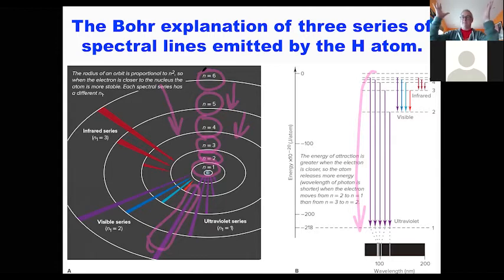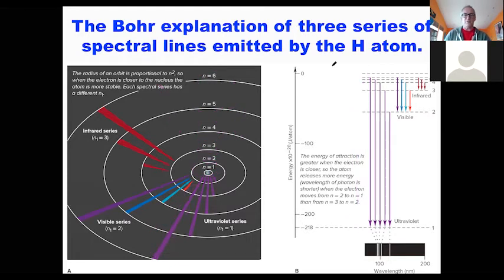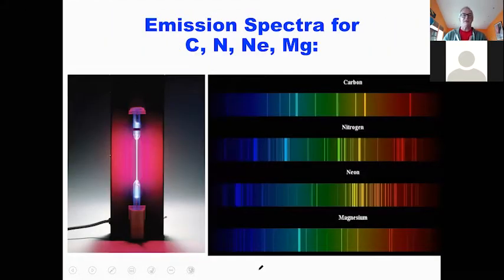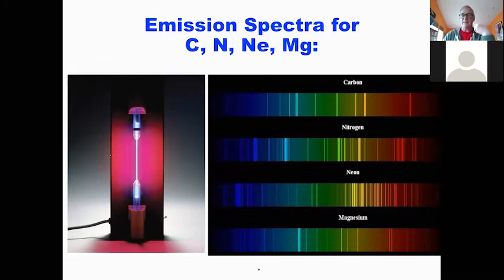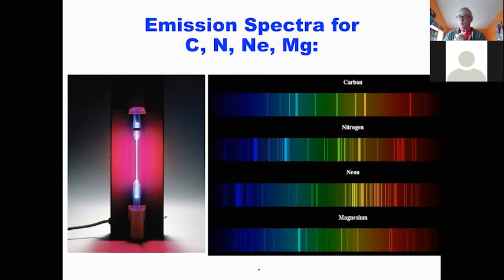So this must be how everything works — except there's a problem. When you look at basically anything else — carbon, nitrogen, neon, magnesium — the emission spectra get hideously more complicated. When you try to use Rydberg's equation, it doesn't work anymore.